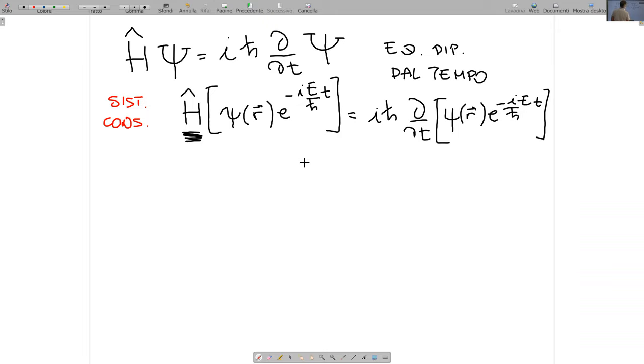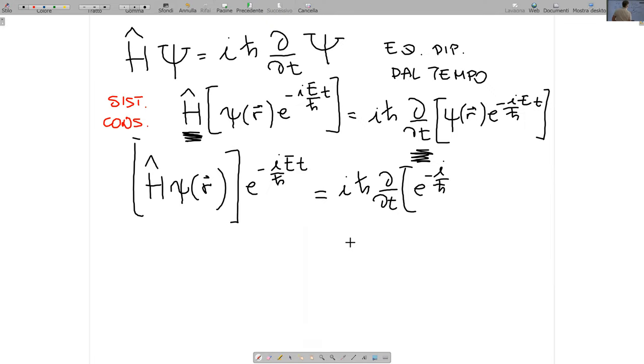E tagliata, EP, rimane fuori da questa moneta. Questo è uguale, qui è tagliato, la derivazione rispetto al tempo parziale qui non deriva la funzione psi, ma deriva solo il fattore, e abbiamo un meno i E su h tagliato per tutto, rispetto al tempo, è la funzione esponenziale stessa.